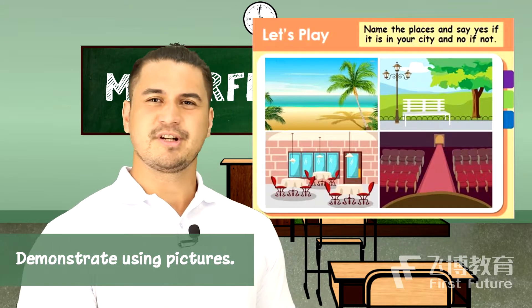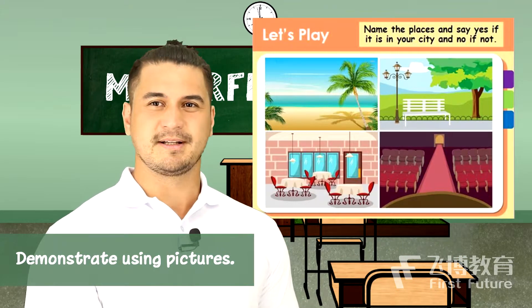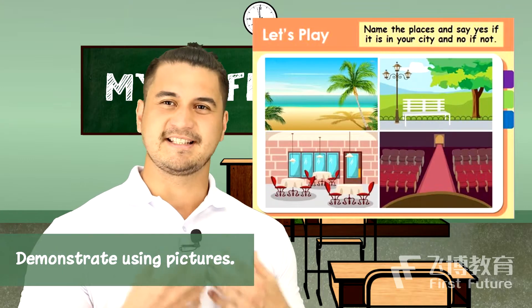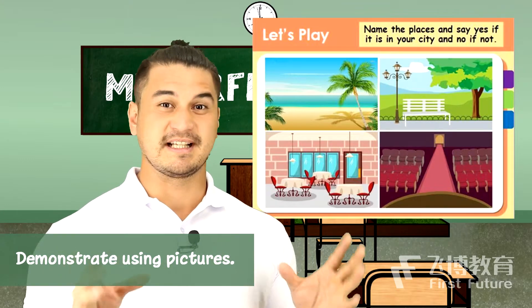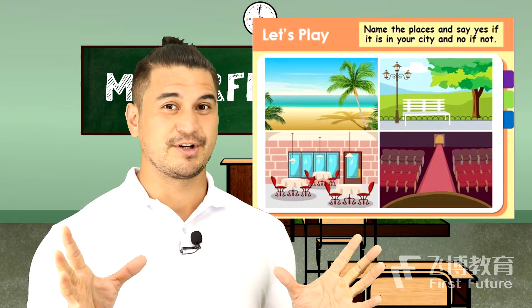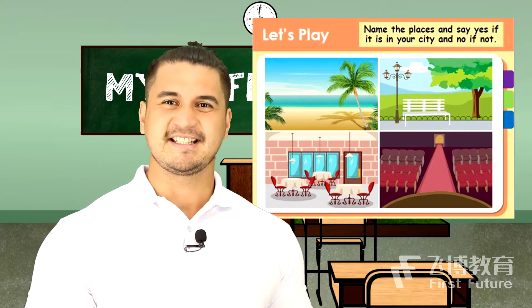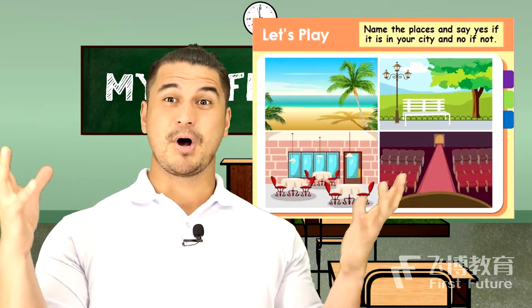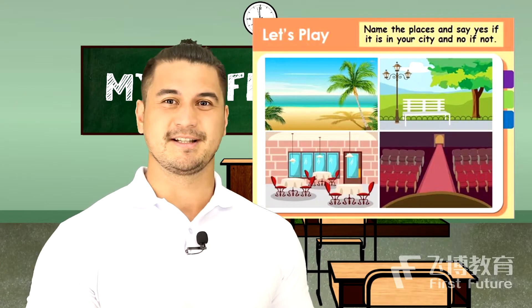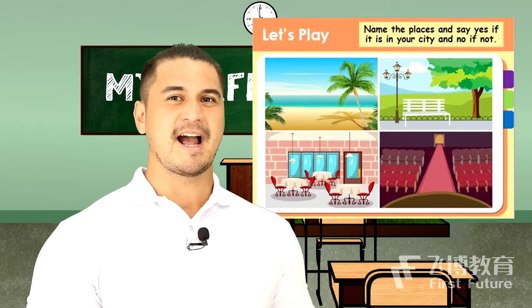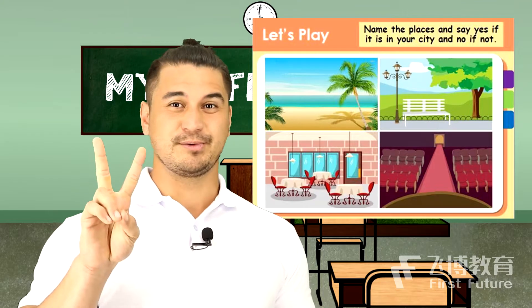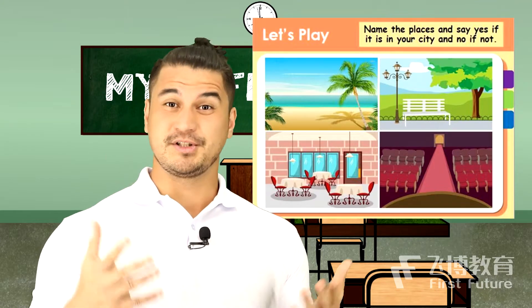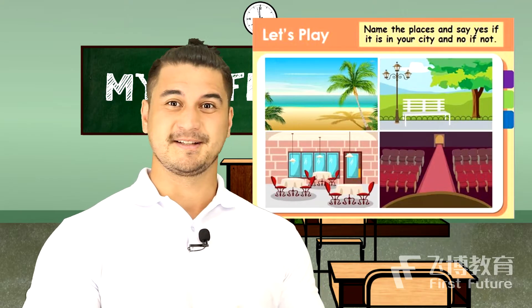In picture number 1, I see the beach, I see water, I see a palm tree. How about you? In picture number 2, what do you see?